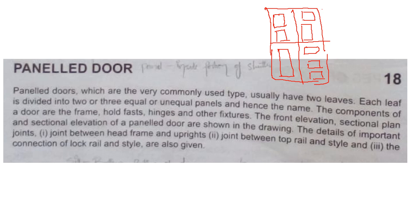A door will have leaves, divided into leaves. The leaves will have different numbers of panels. The components of a door are the frame, the holdfast, hinges and other fixtures. The front elevation, sectional plan and sectional elevation of the paneled door are shown in the drawing, along with the details of the important joints - joint between head frame and uprights, joint between top rail and stile, and the connection of the low rail and the stile.